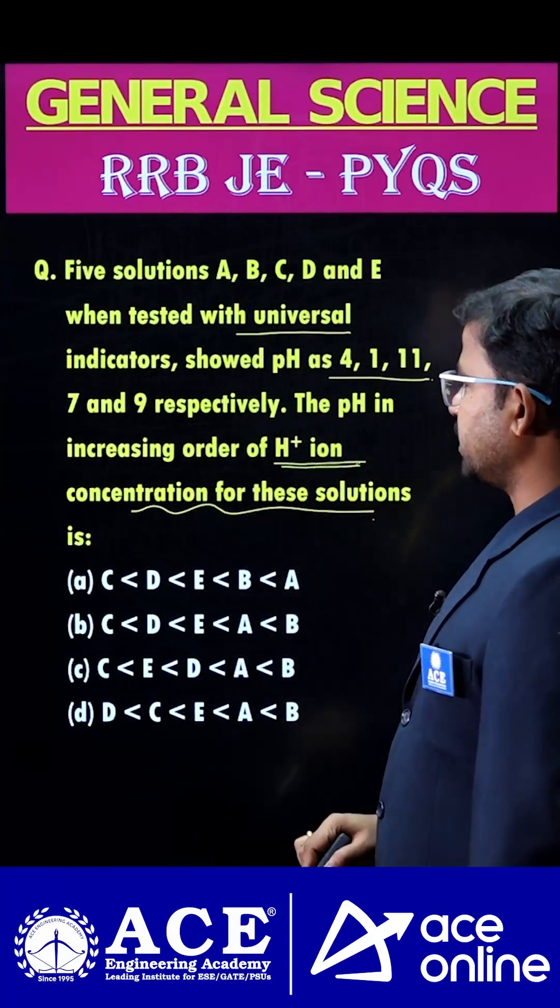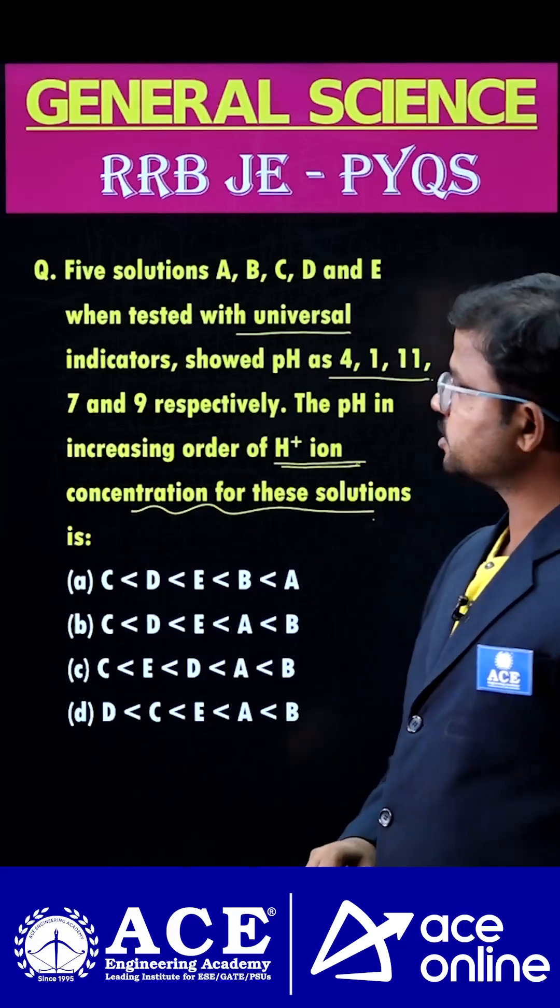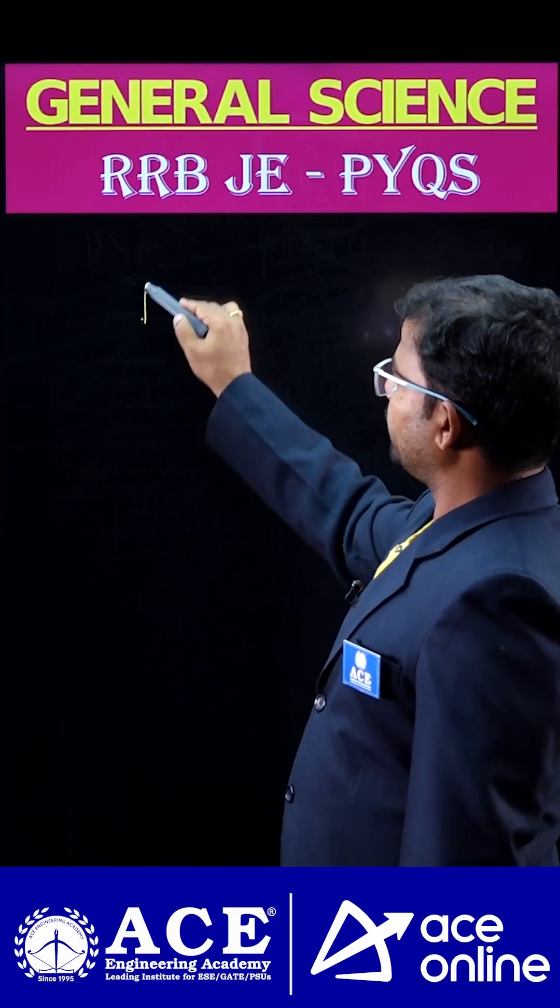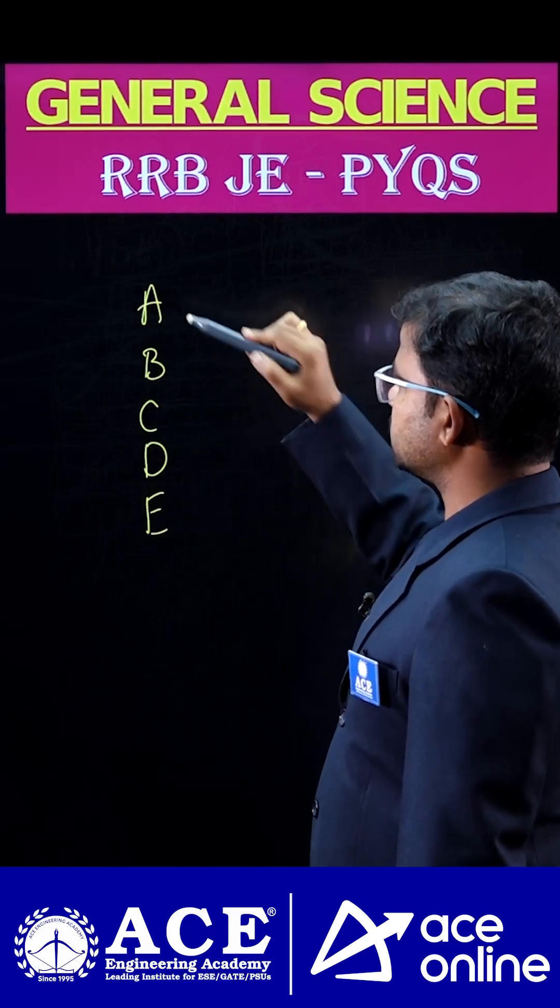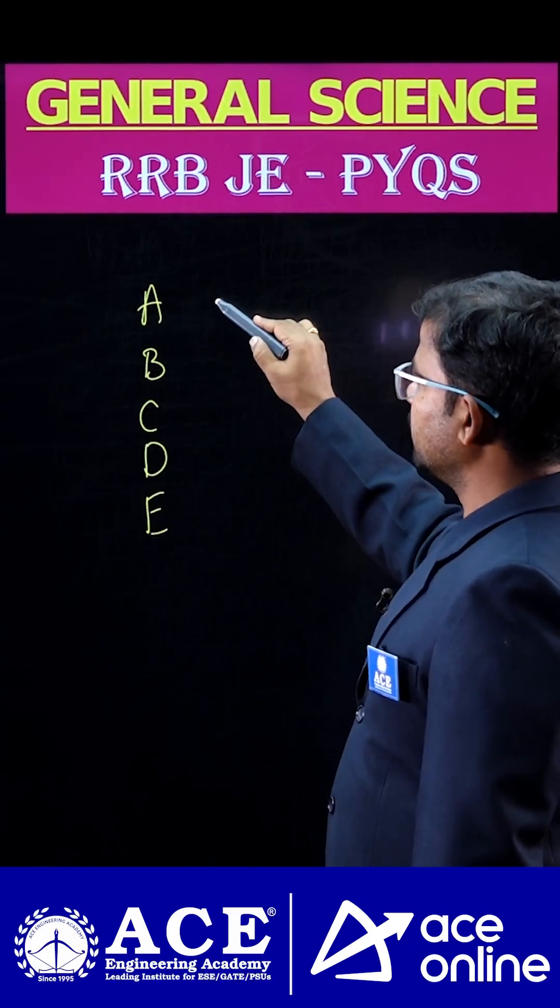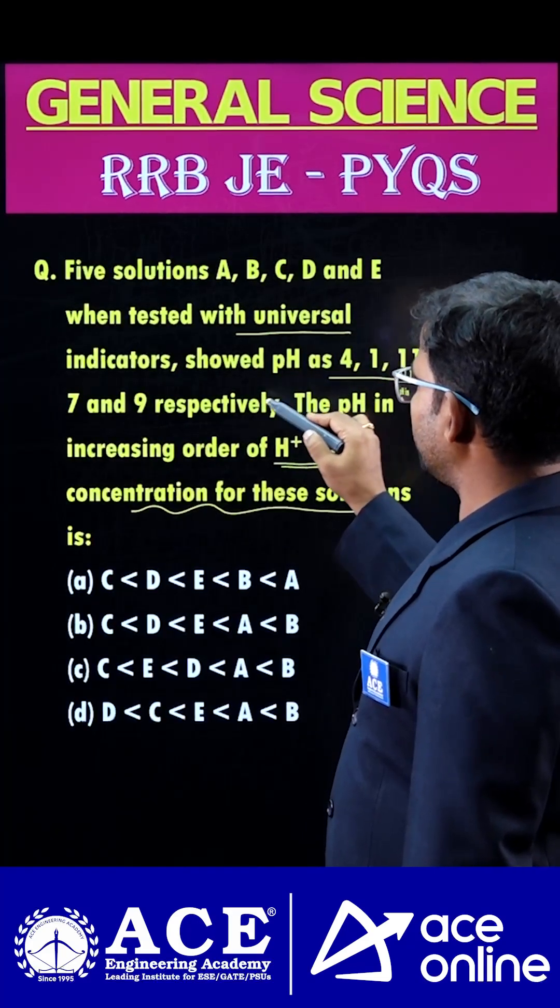The question asks for the increasing order of H+ ion concentration for the given solutions A, B, C, D, and E. When tested with universal indicator, the pH values are: A is 4, B is 1, C is 11, D is 7, and E is 9.